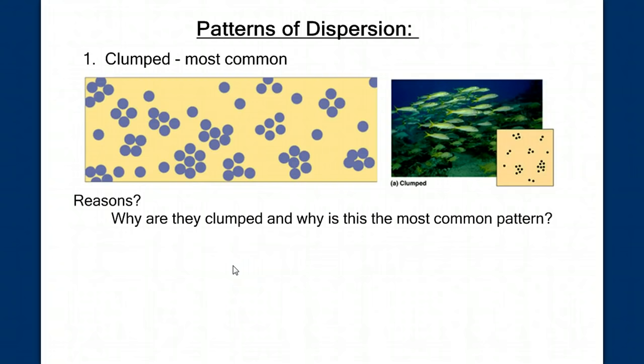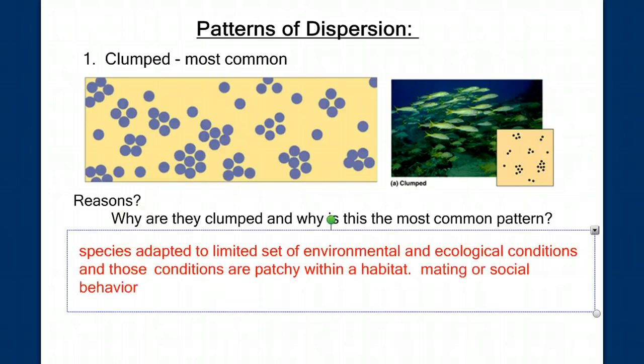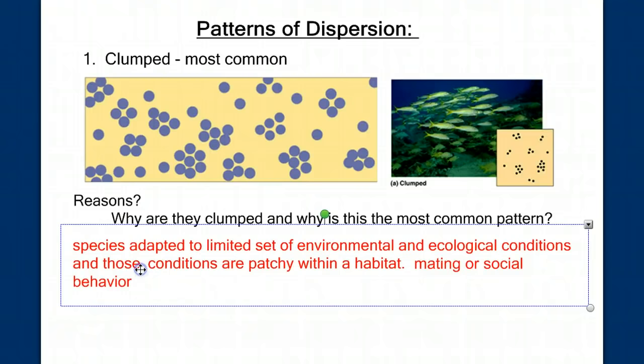What ideas did you come up with? What is it that they'd be clumping around? What is it that they need to stay near? Well, probably resources like food and water. Species are adapted to a limited set of environmental and ecological conditions, and those conditions are patchy within a habitat. They're heterogeneously distributed. So we would expect that the organisms would also be heterogeneously distributed around those pockets of resources. And also, for mating and social behaviors, it makes sense for organisms to clump together.